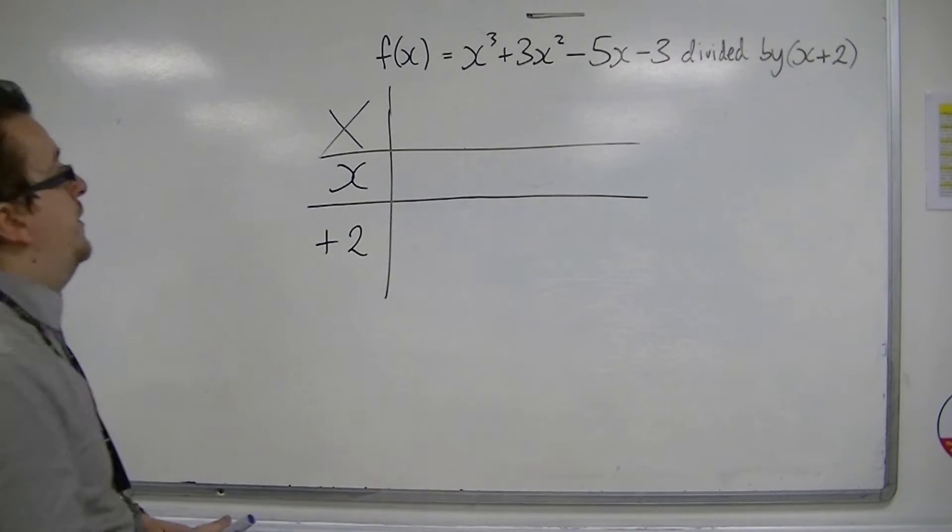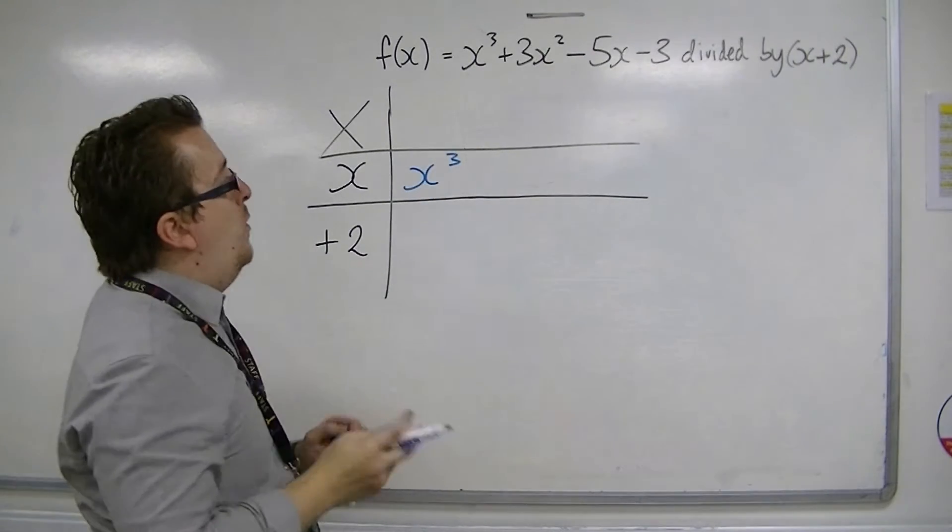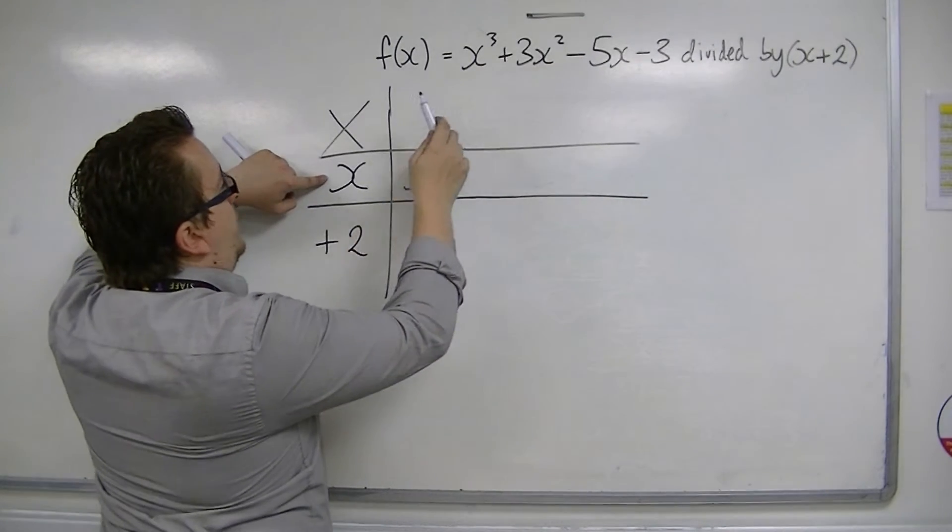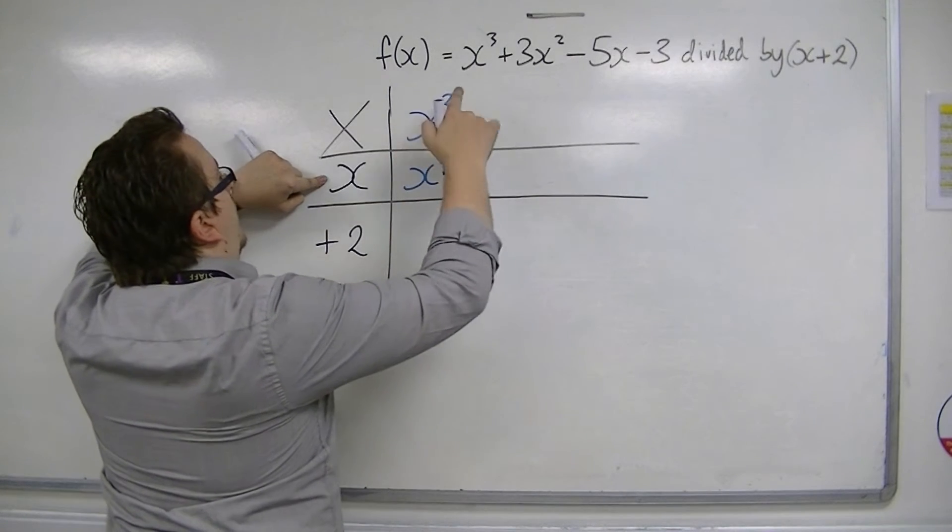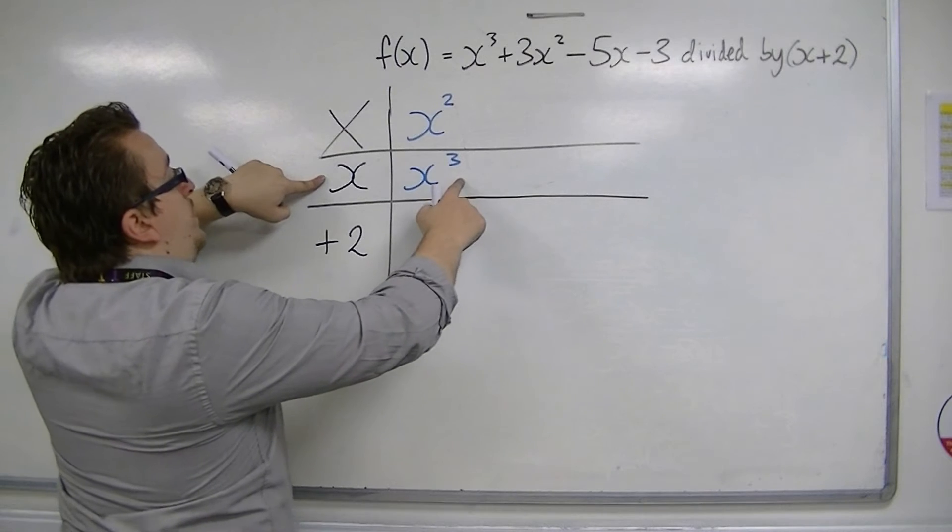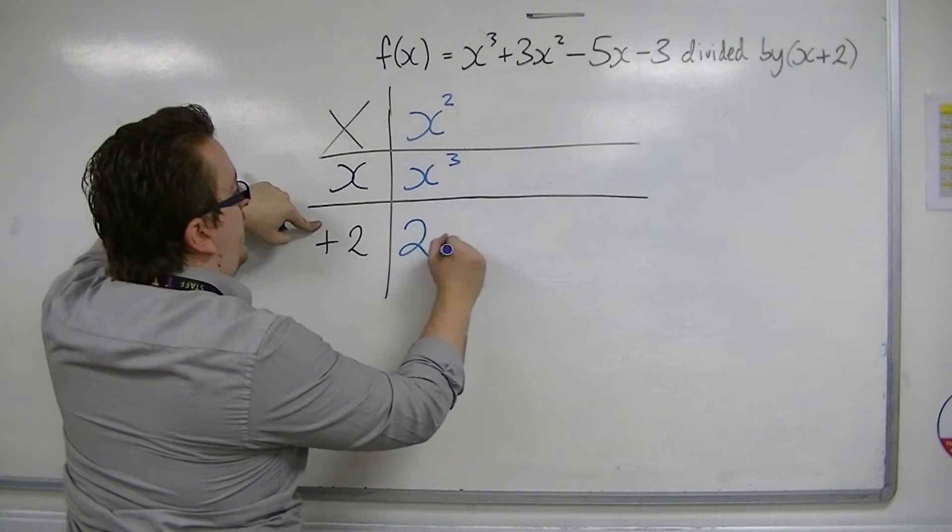Now, what we want is to get x cubed. There's only one way that I can get x times something to be x cubed, and that would be x squared. So, if x squared times x is x cubed, then I'm also going to have x squared times 2, which will make 2x squared.